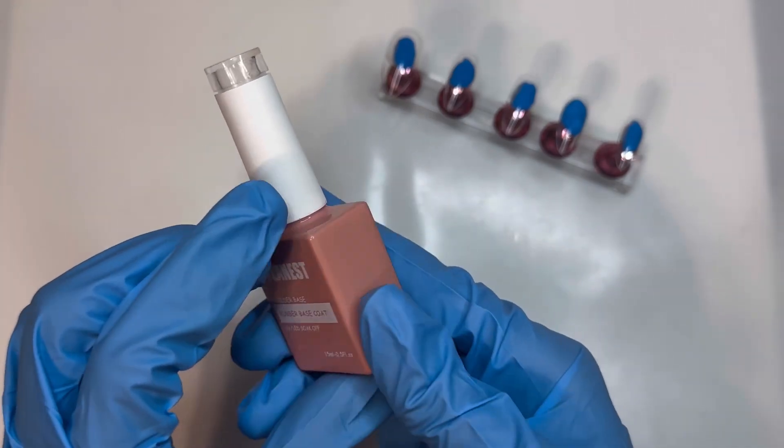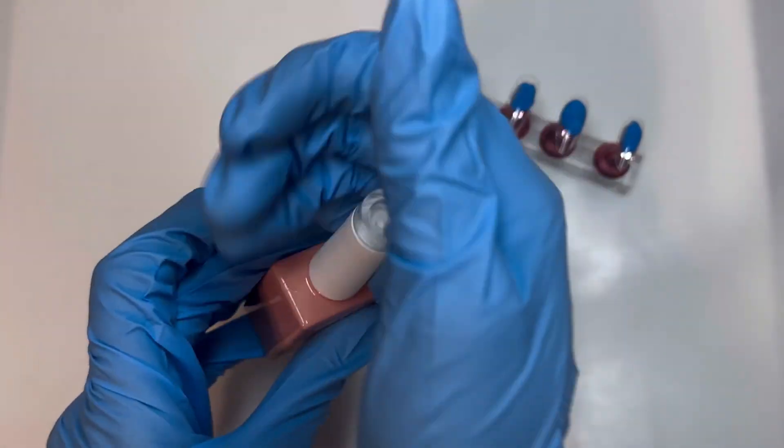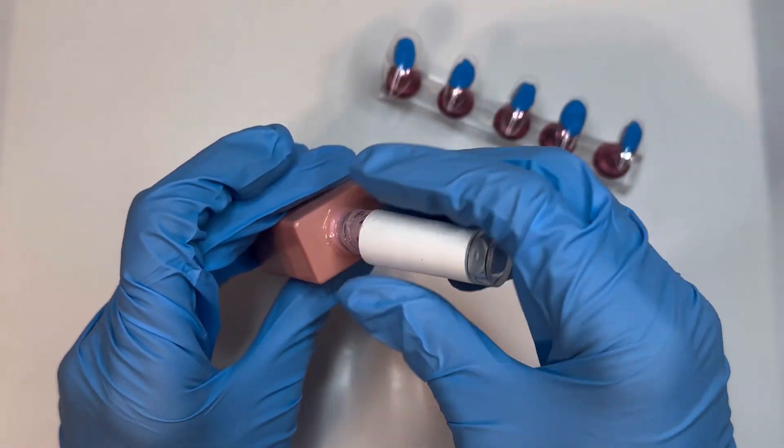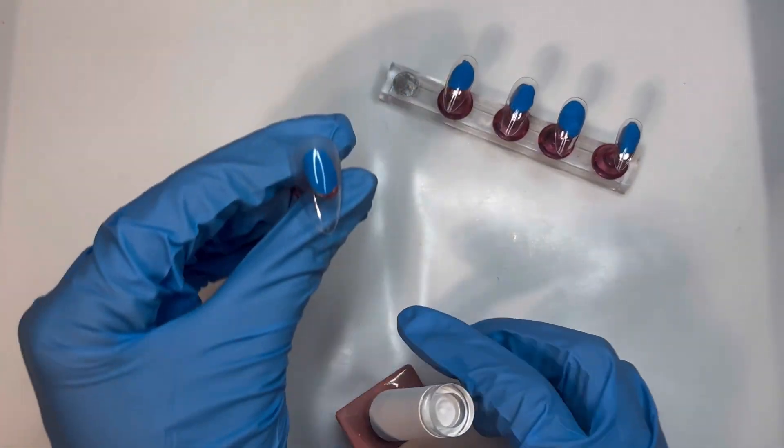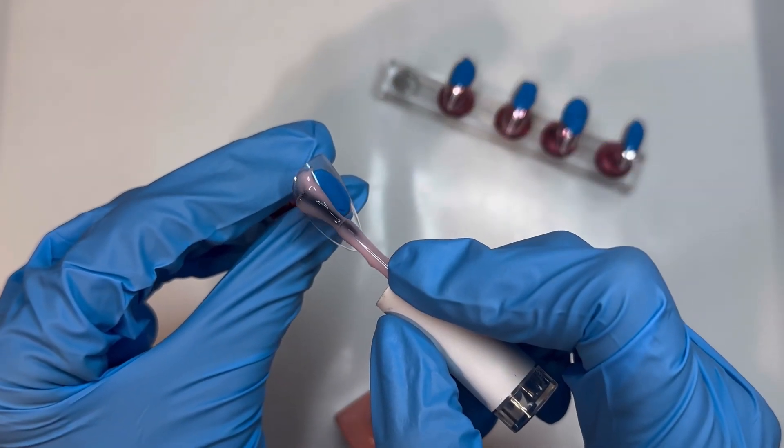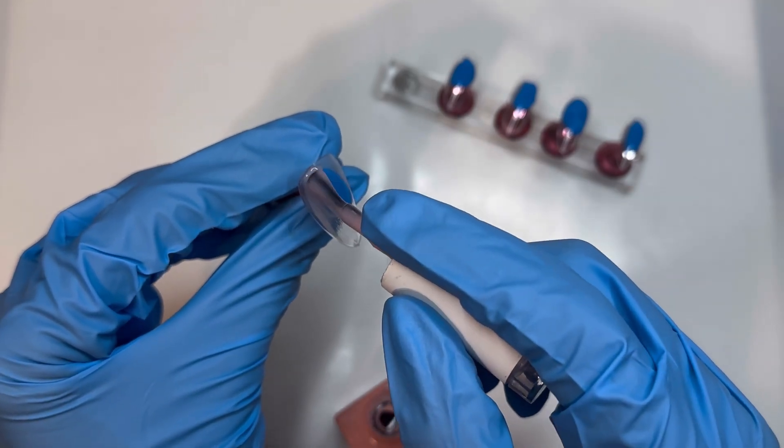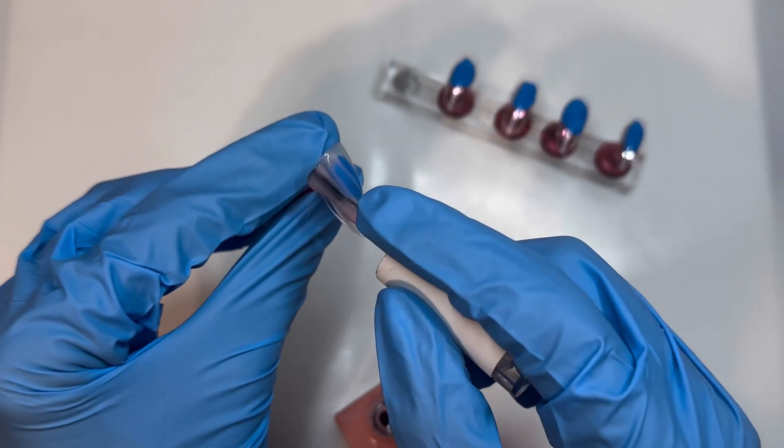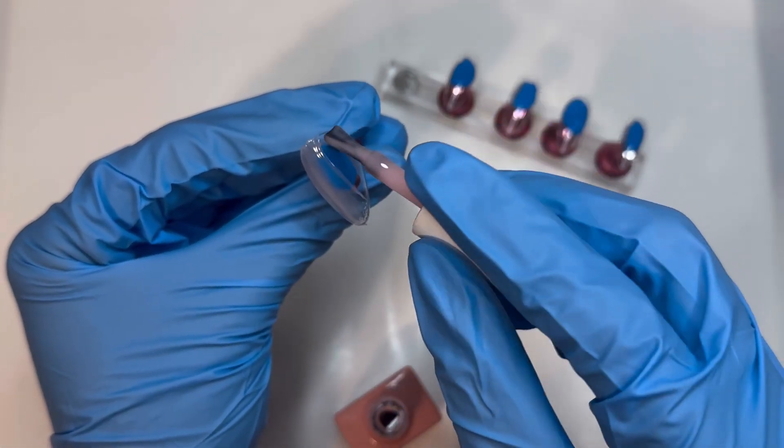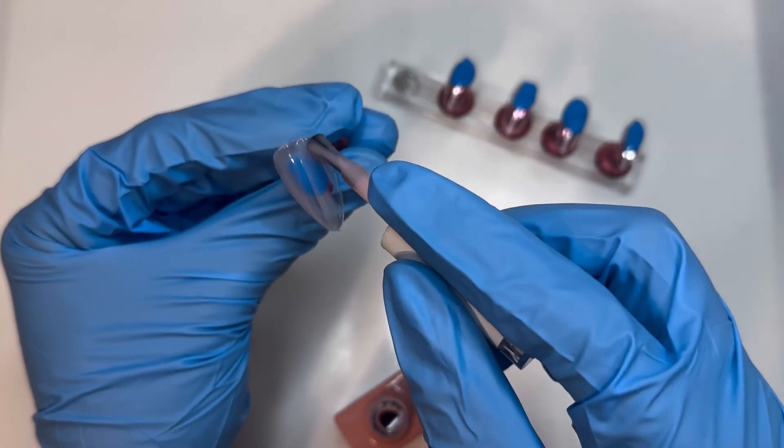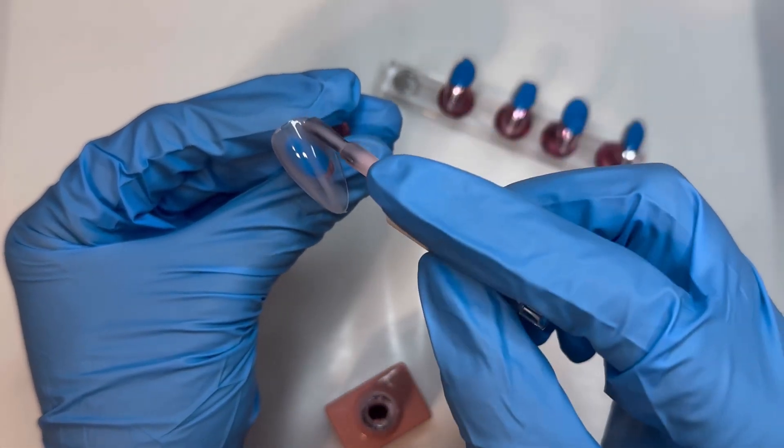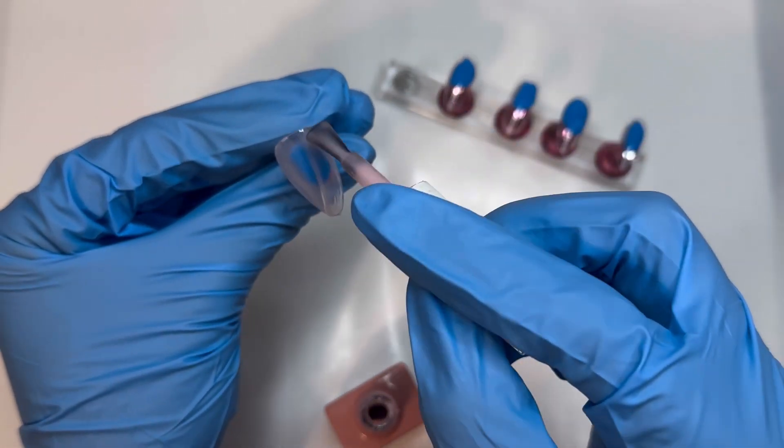I honestly have not had much experience with builder gel, but I really wanted to give it a try today. I think there's a specific way you're supposed to apply it, like letting it fall off the brush onto the nail and moving your brush in a side-to-side motion until it's fully covered. However, I don't think I have enough builder gel to try it that way, so I'm just painting it on as I normally would with any other gel polish.